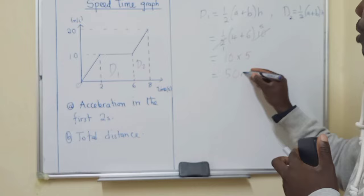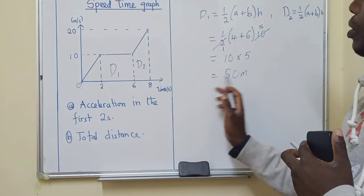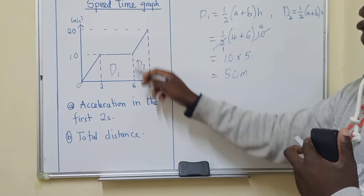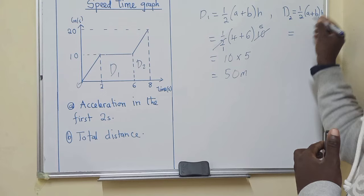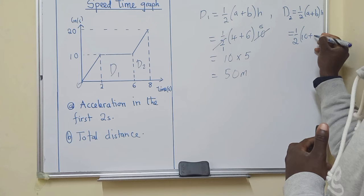So if this graph ended here we would have said this is the total distance, but there is something up to here. And if you can see the shape which is here is also a trapezium, so we will continue.